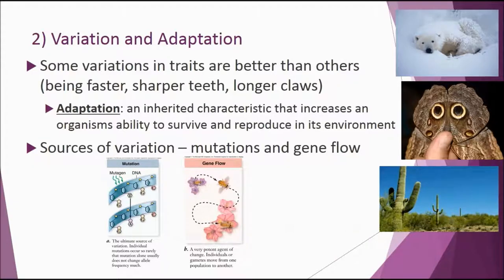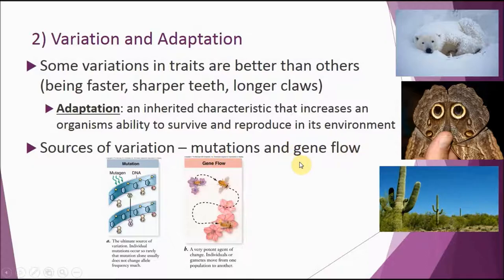In any kind of population there are always differences. We call those differences variations. Some things that cause variation are mutations — genetic changes in DNA — and something called gene flow, which we'll talk about later.